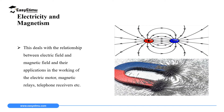Another important branch of physics is electricity and magnetism. Here we focus on the relationship between electric fields and magnetic fields. When electric fields interact with magnetic fields, we get wide applications such as the working of an electric motor, magnetic relays, telephone receivers, loudspeakers, and the electric bell.